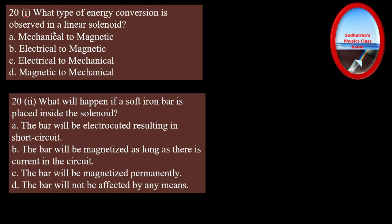Question one: what type of energy conversion is observed in a solenoid? Many students feel the answer is electrical energy to magnetic energy. However, when electricity is passed through a linear solenoid, the motion of electrons creates mechanical effects. So the correct answer is electrical energy to mechanical energy — that is the energy conversion observed here.